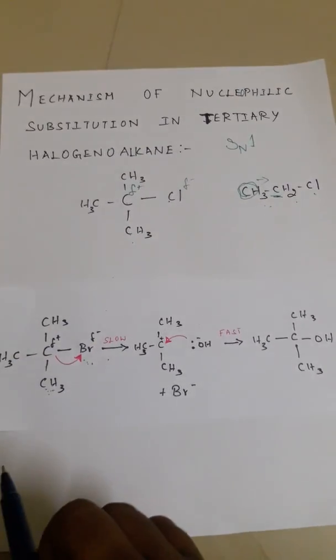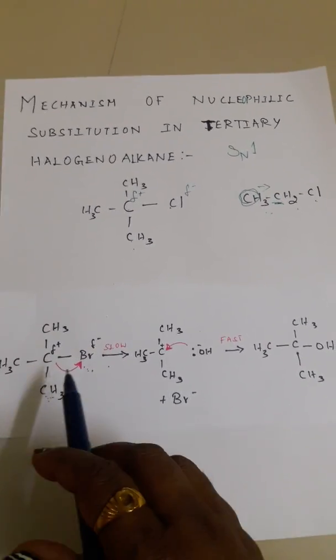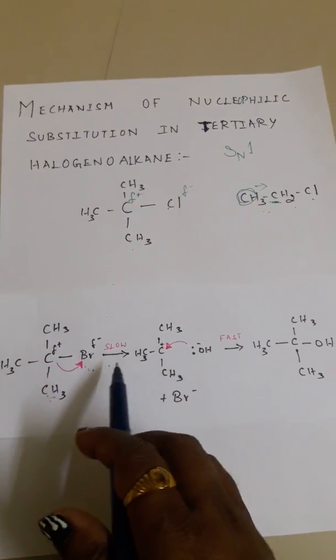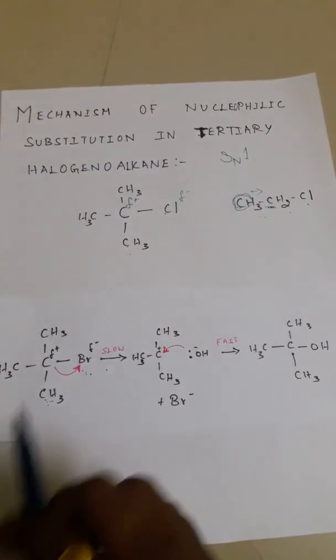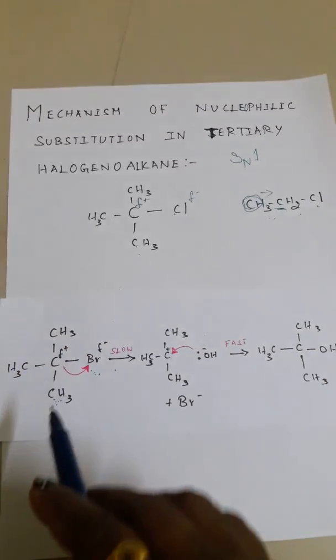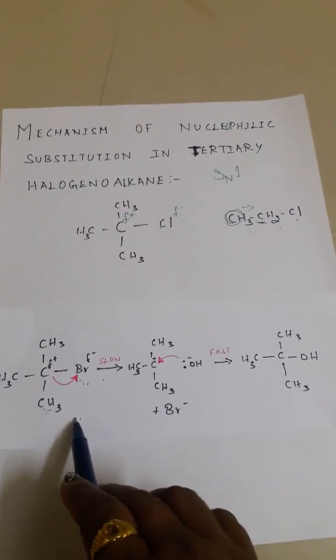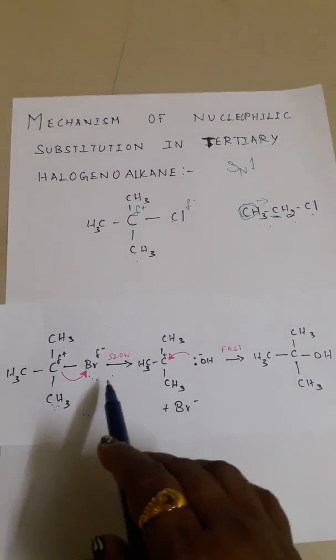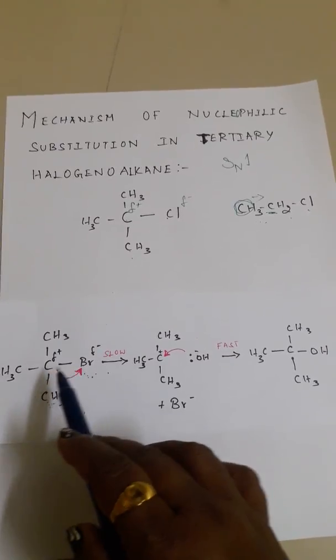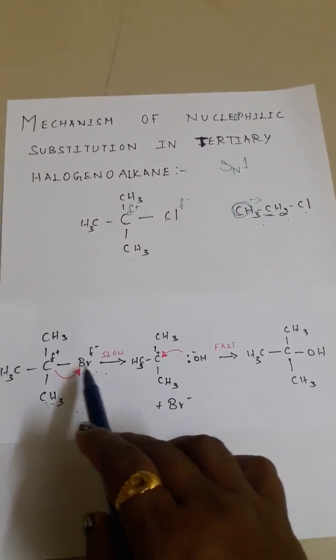In primary haloalkanes, hydroxyl and bromine removal happen simultaneously. But in tertiary haloalkanes, that will not happen. First, one species reacts.